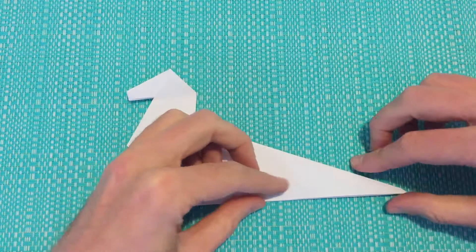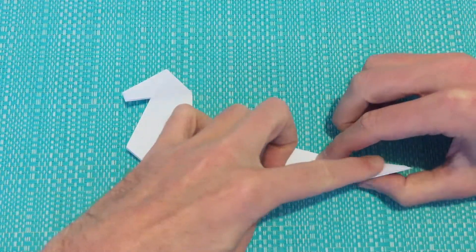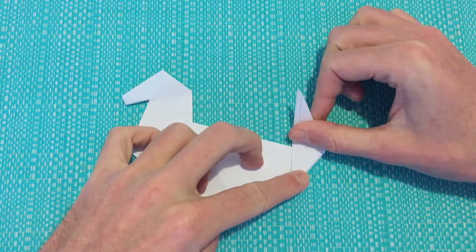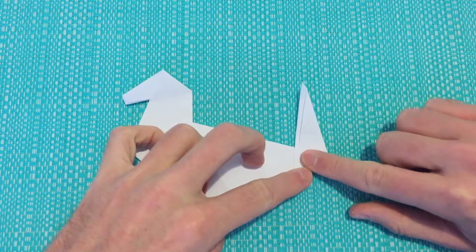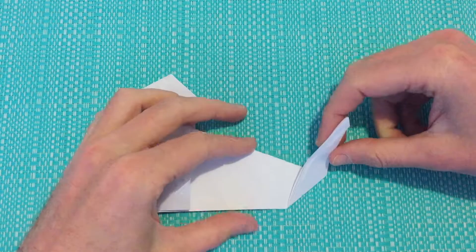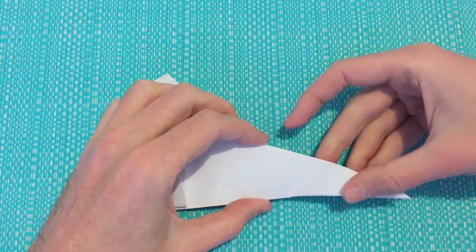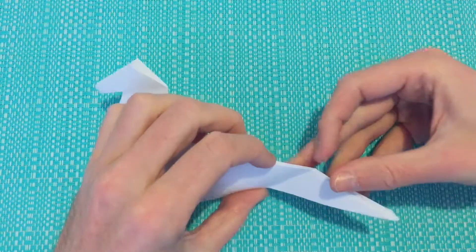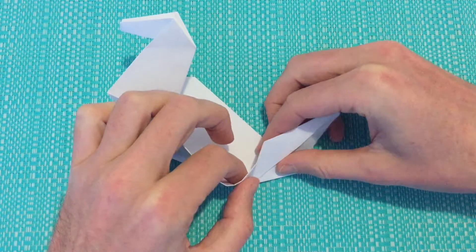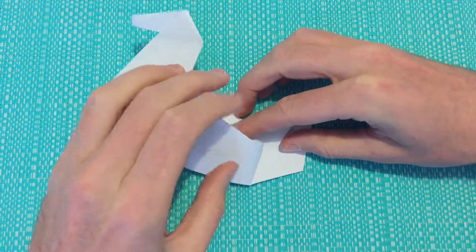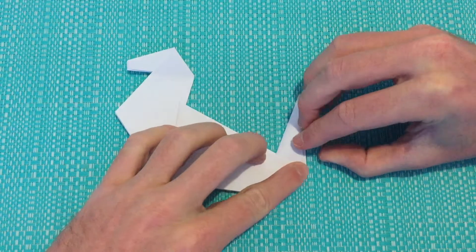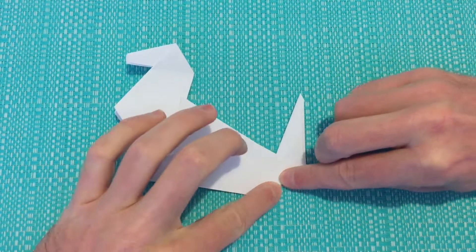And now for one of the final steps, we'll take this bottom right point, facing it up for our tail. Choose whatever length you'd like, pointing it upwards, creating a crease. Open the fold. Open it completely. And we're just flipping it the other way around. Closing up the fold.